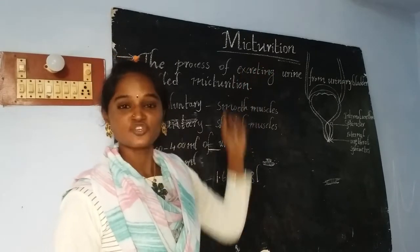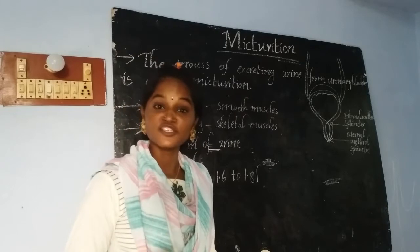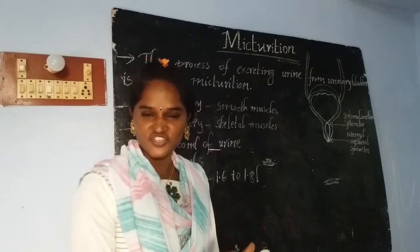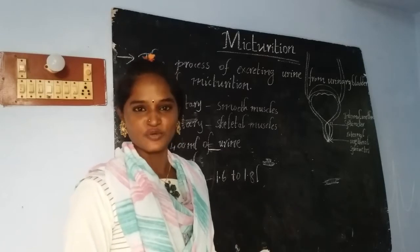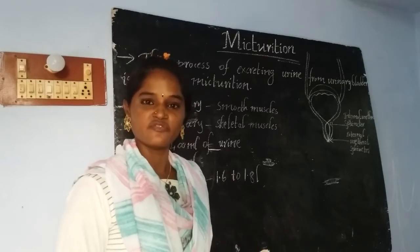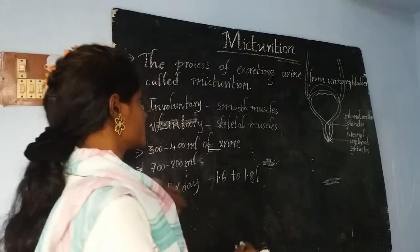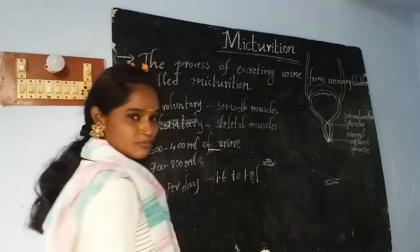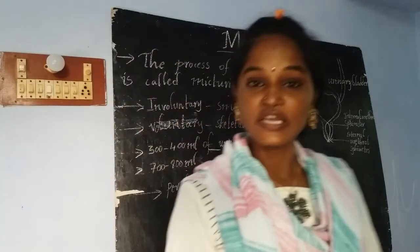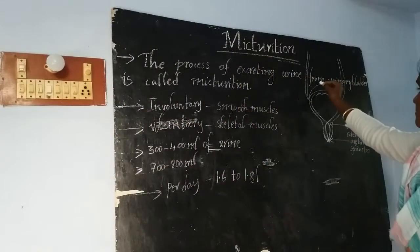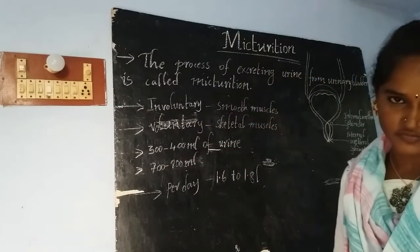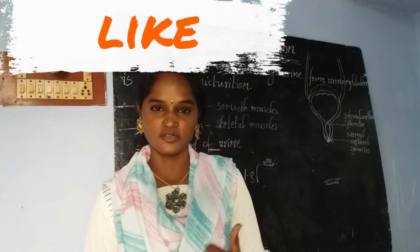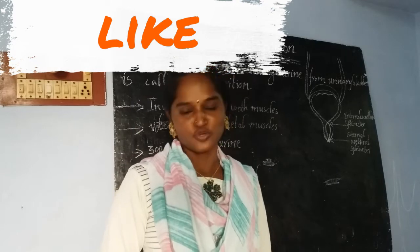What is micturition? Micturition is also called as urination. The process of excreting urine from the urinary bladder is called as micturition.